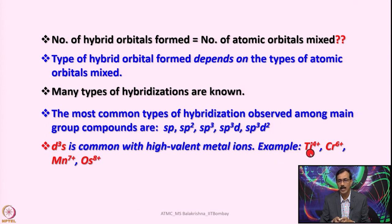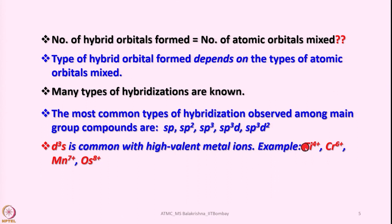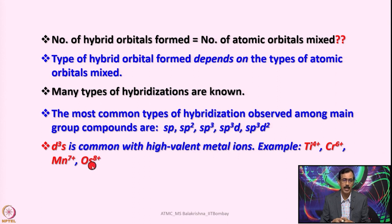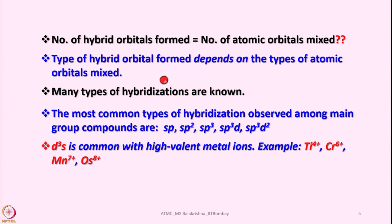For example, titanium tetrachloride is not SP3 hybridized but rather utilizes D3S, using the 3D and 4S inner orbitals. Similarly, in potassium dichromate, chromium uses D3S; in KMnO4, manganese uses D3S; and osmium tetroxide, where osmium is in the +8 oxidation state, also utilizes D3S. However, the most common hybridizations for main group elements are SP, SP2, SP3, SP3D, SP3D2, or D2SP3. And importantly — the number of hybrid orbitals formed does not always equal the number of atomic orbitals mixed; there is an exception.